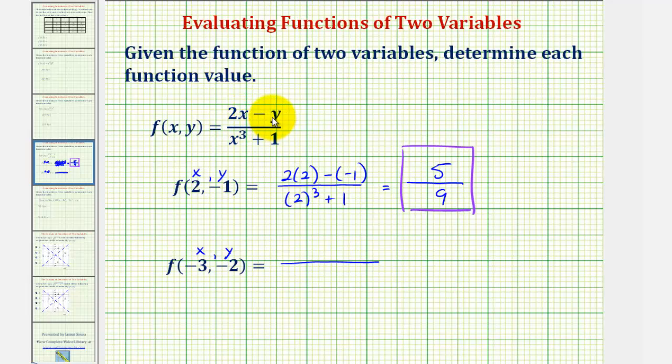So for the numerator of two x minus y, we'd have two times negative three minus negative two. So being careful of the signs here, we'd have negative six plus two, that'd be negative four.